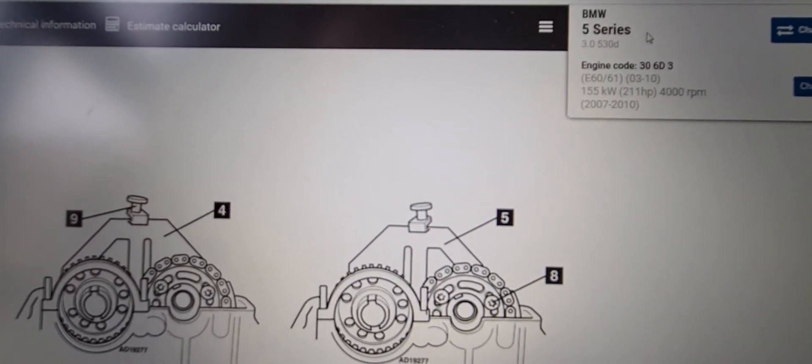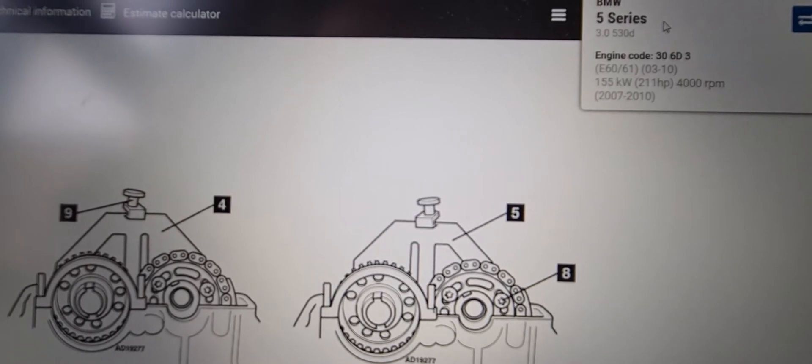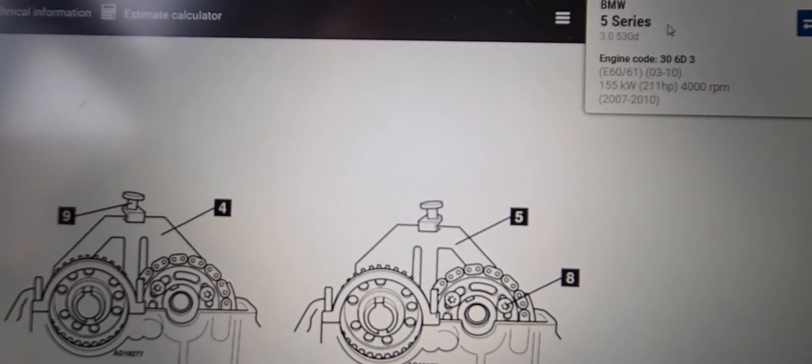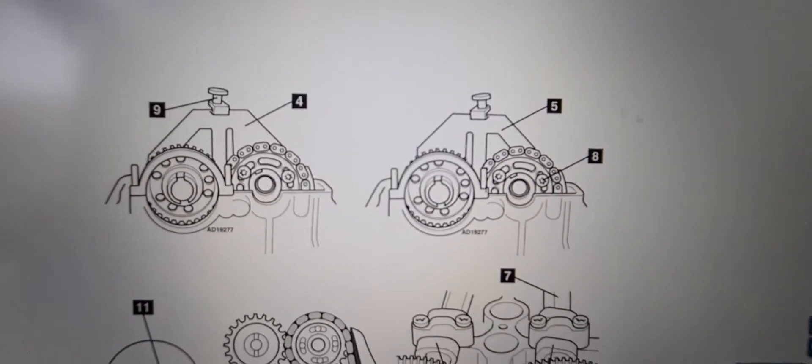Hi everyone, welcome to another video. Today we're looking at the timing chain diagram and the driver belt diagram for the BMW 5 Series 3L 520D between 2007 and 2010. So firstly we'll look at the timing chain diagram.